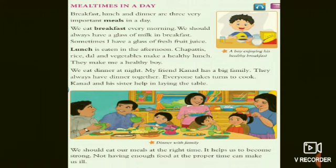We eat dinner at night. Kanad has a big joint family; they always have dinner together and everyone takes turns to cook. Kanad and his sister help in laying the table. We should eat our meals at the right time — it helps us become strong. Not having enough food at the proper time can make us ill. You have to take your meals daily, at least three times, at a particular time.